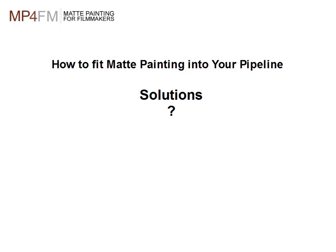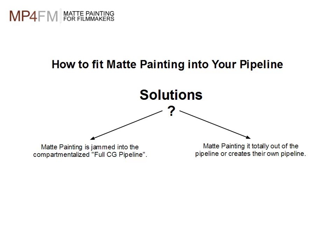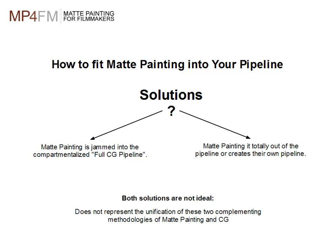Now that we've talked about where matte painting fits into the pipeline, we'll discuss solutions for how to fit matte painting into your pipeline. There are a couple of initial choices: one, you could jam matte painting into the compartmentalized full CG pipeline, which is great for CG but quite cumbersome for matte painting. Or, since no one knows what to do with matte painting, it sets up a completely separate pipeline. Both solutions are not ideal because neither represents a unification of the complementing methodologies of matte painting and CG.